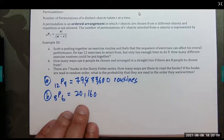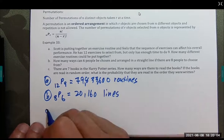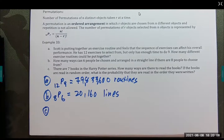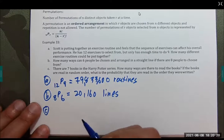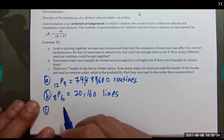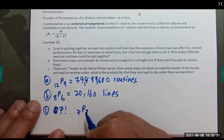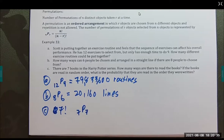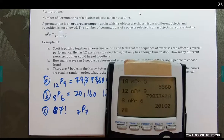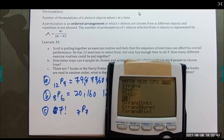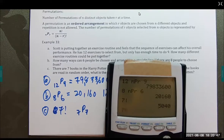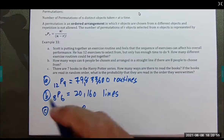Part C: there are seven books in the Harry Potter series. How many ways are there to read the books? And if the books are read in random order, what's the probability they are read in the order they were written? Because we're reading all seven books, this is simply 7 factorial — which is also 7 permutation 7. Both calculations give the same result.